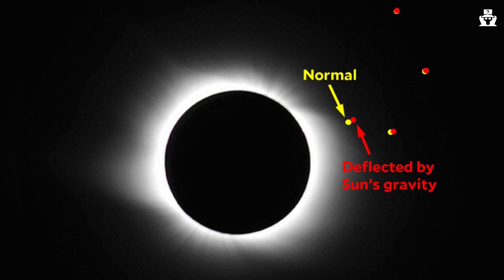After that, Eddington spent several months analyzing the photographs taken during the experiment. He compared the positions of the stars in the photographs with their expected positions, and found that they had shifted slightly. This confirmed Einstein's prediction that the Sun's gravity had bent the path of light.